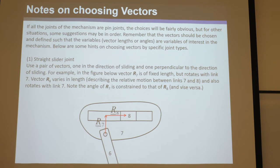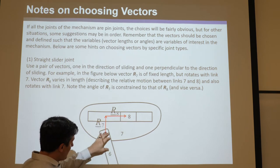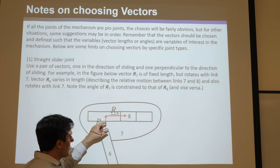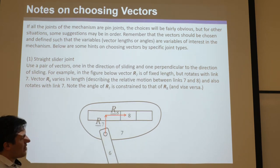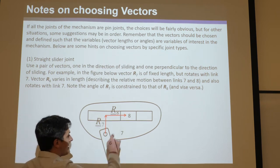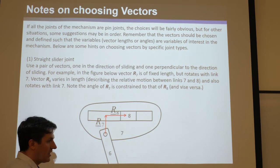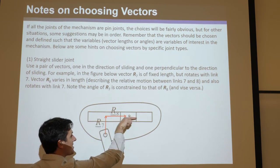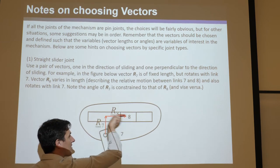Here's the first hint. Say you've got link 6 attached to link 7, and there's a big slot cut out of link 7. Then you've got another link 8 sliding in this slot. How would you draw vectors dealing with that? You have to think: I care about the translation of 8 in this sliding joint, so we're probably going to want to make an arrow that points in the direction that 8 is sliding.